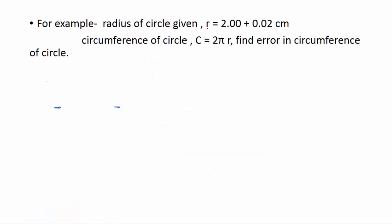So let's take an example. Here radius of a circle is given and we have to find circumference of the circle. Here circumference is the product of a constant value 2π and variable r.